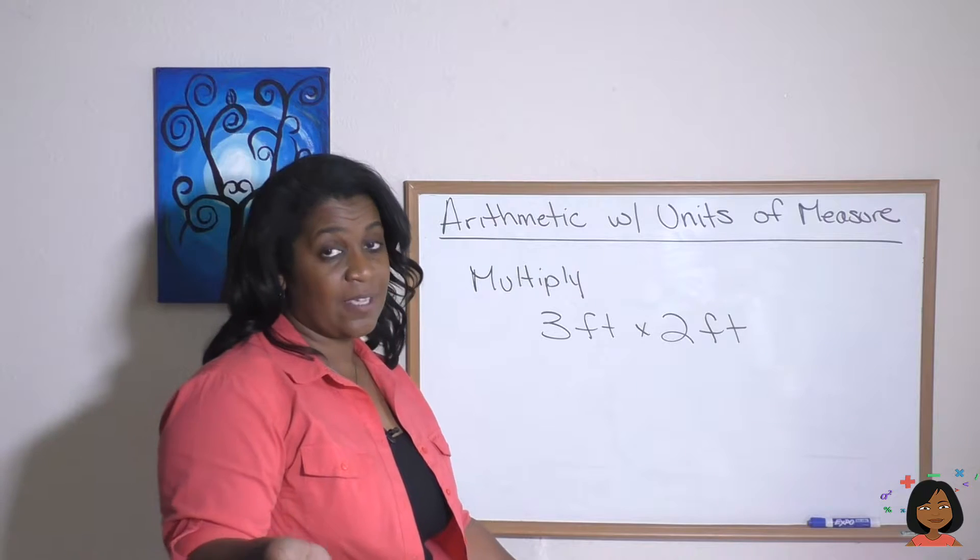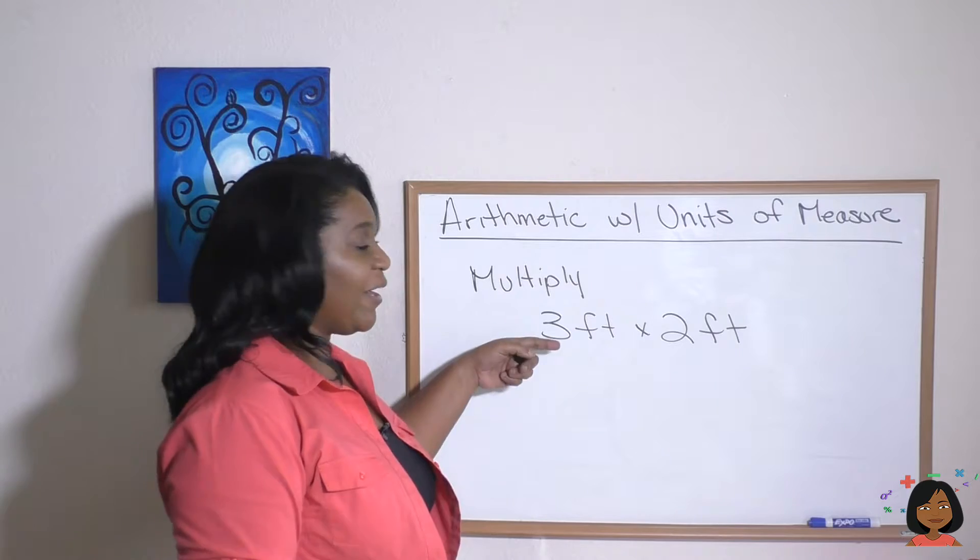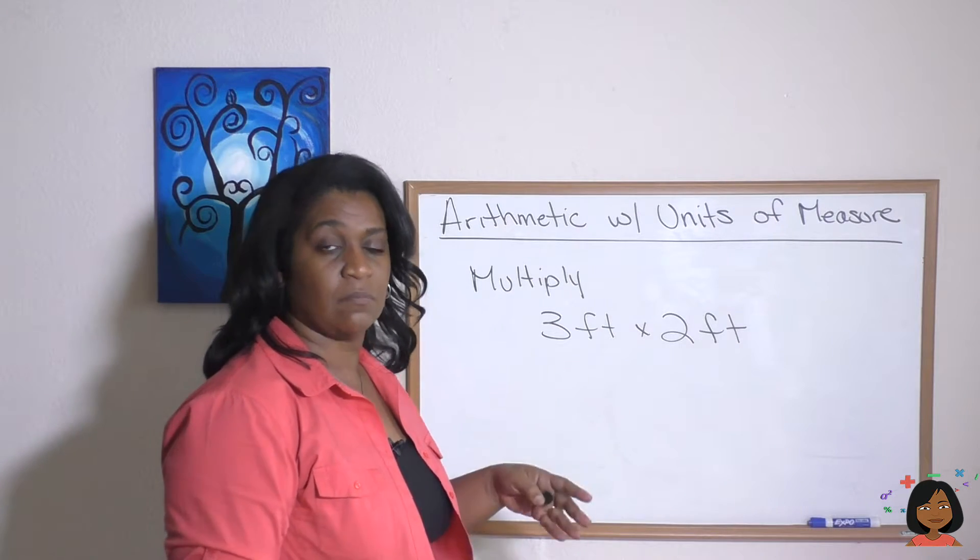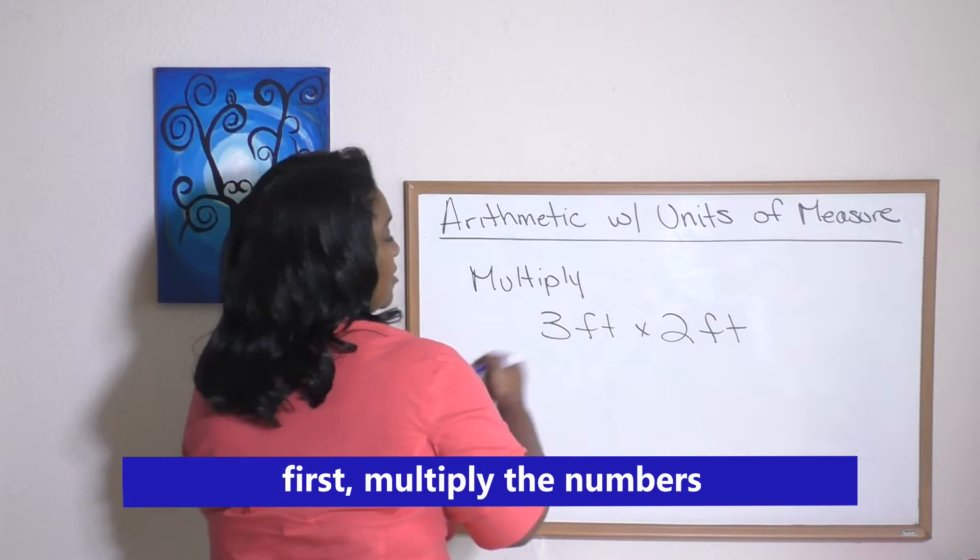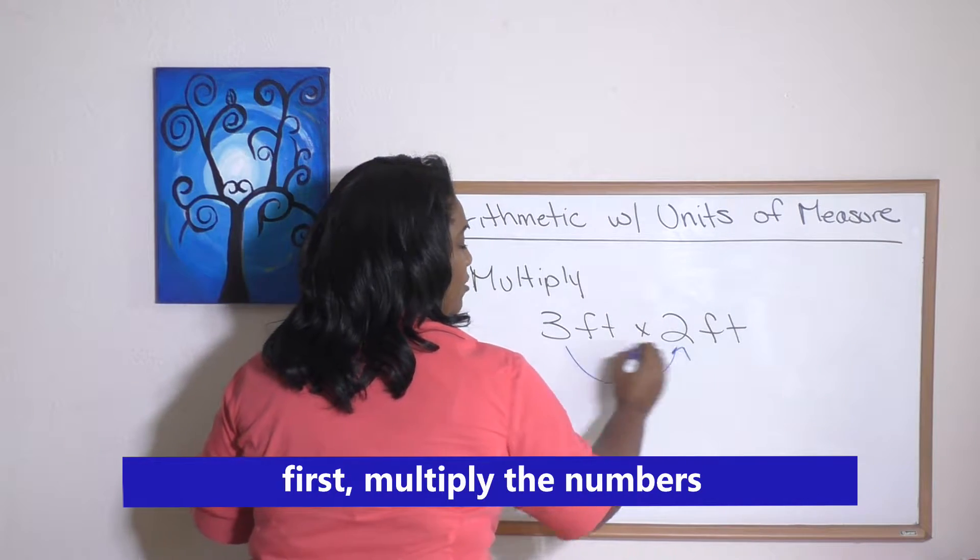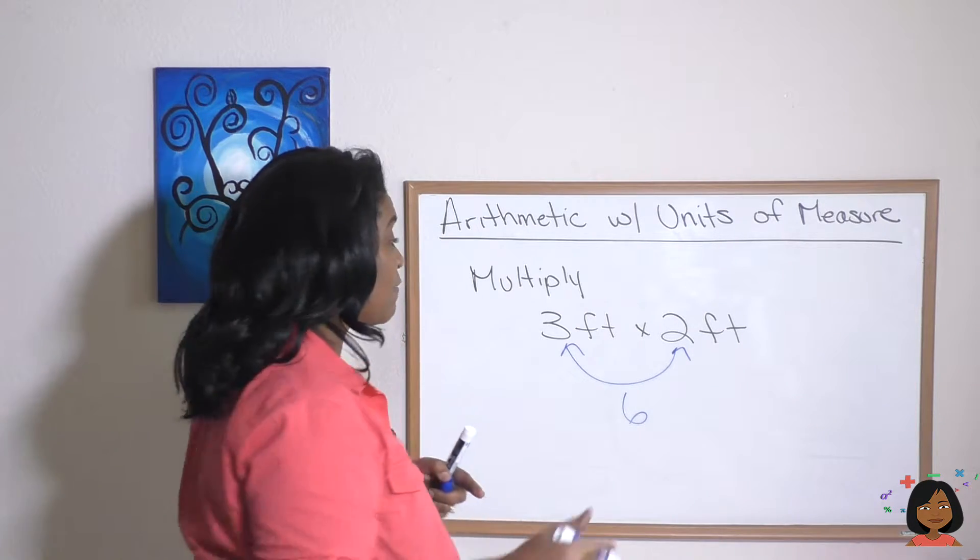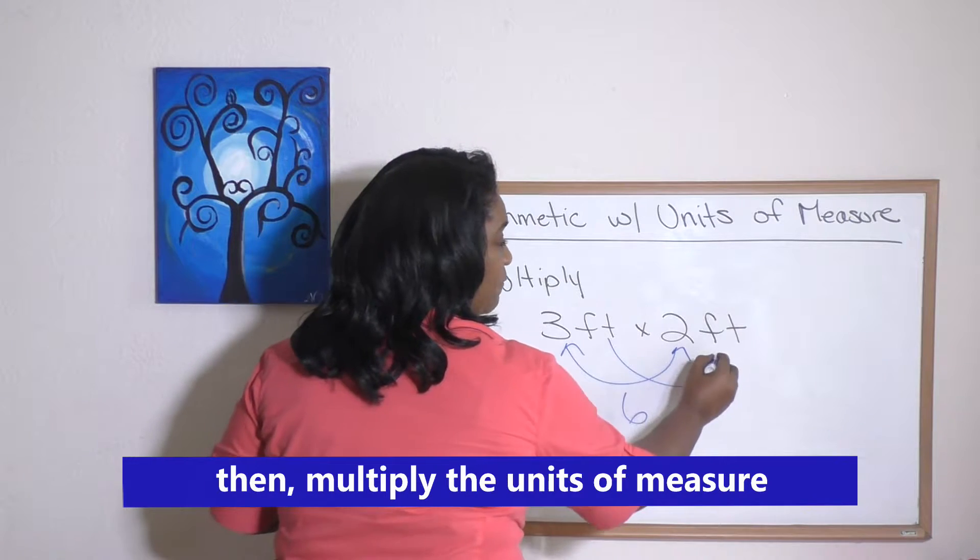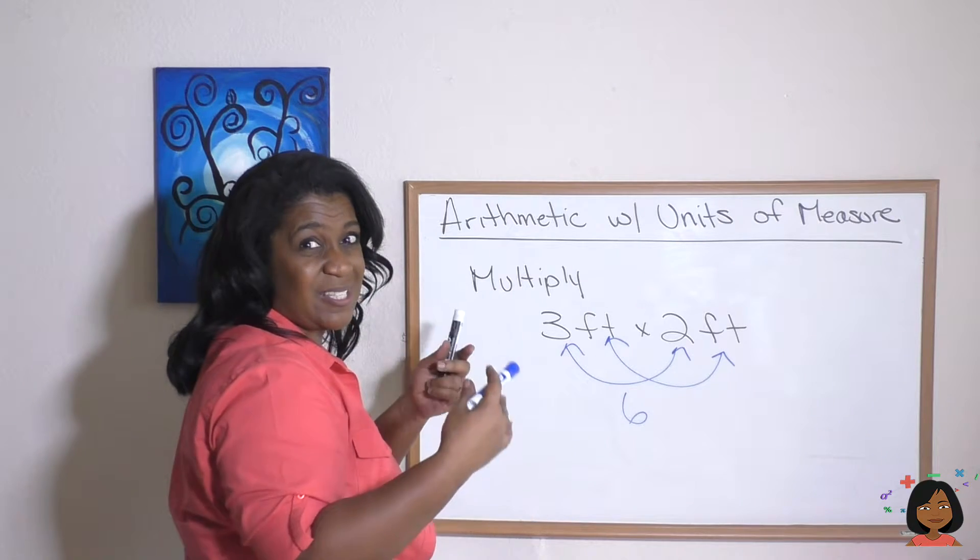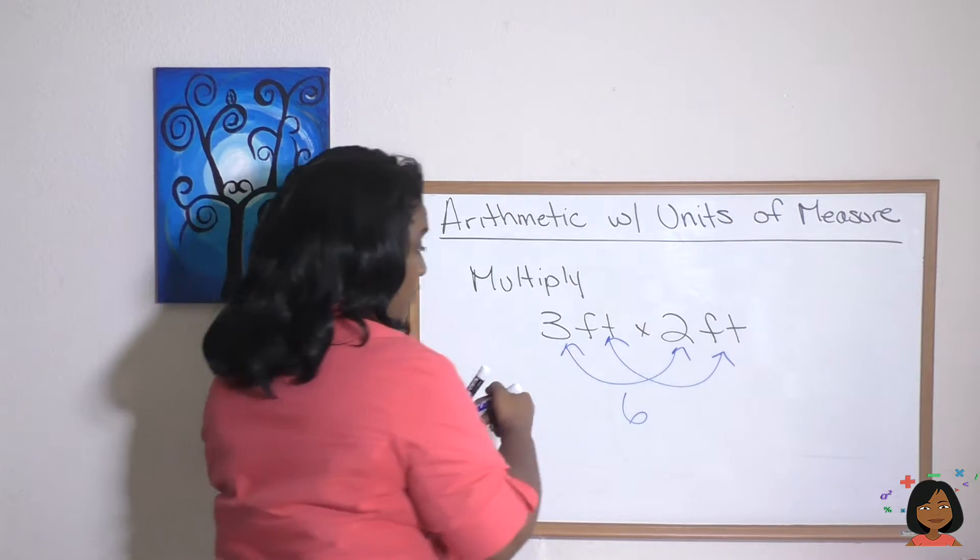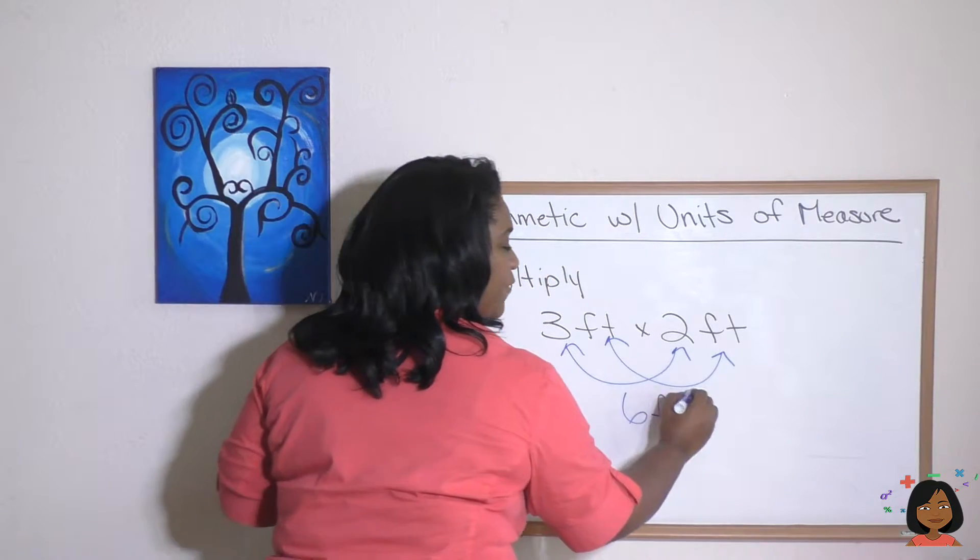What if we just wanted to multiply units of measure? Here I have three feet times two feet. Well, there's two sets of things we need to multiply here. First, we need to multiply our three and our two, which we know gives us six. But when multiplying units of measure, we also need to multiply our feet with our feet. And that gives us feet times feet is feet squared. So that's how we get that label, particularly we're working with area of feet squared.